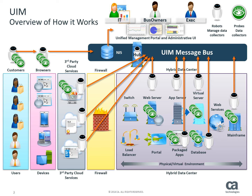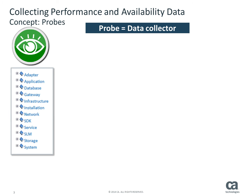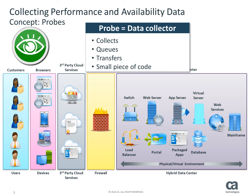Now let's take a closer look at the UIM components that collect and transfer performance data and make it available for notifications, viewing, and reporting. At the core of UIM is the data collector or probe, similar to an agent in other monitoring environments, that really does the work of collecting, queuing, and transferring data. It is software code that is assigned to gather specific information about a specific component in the infrastructure.